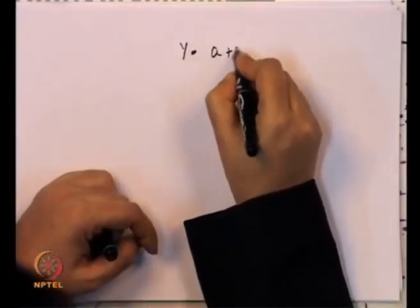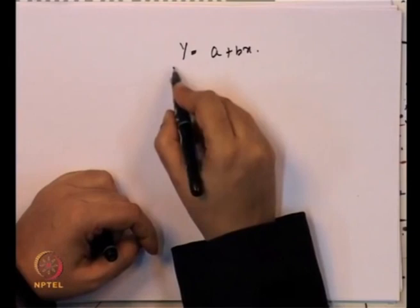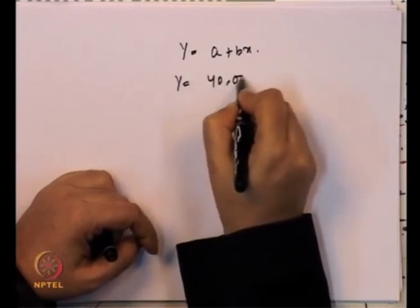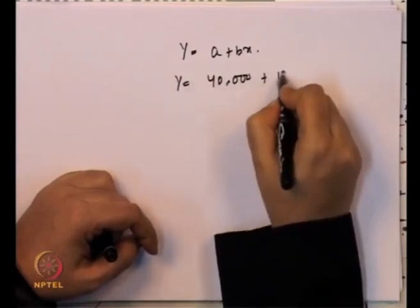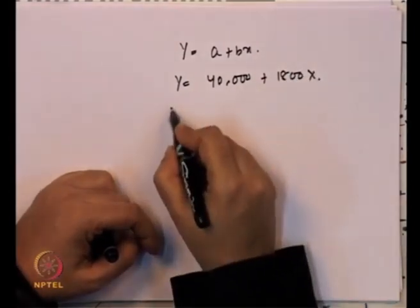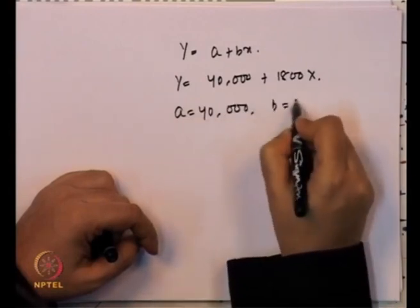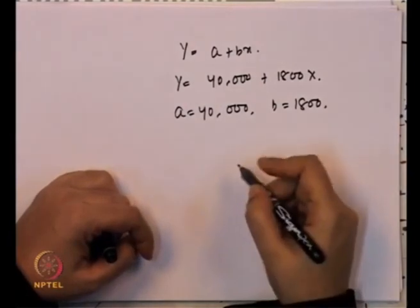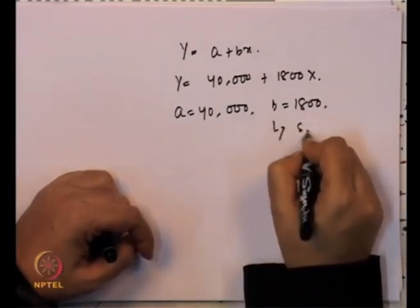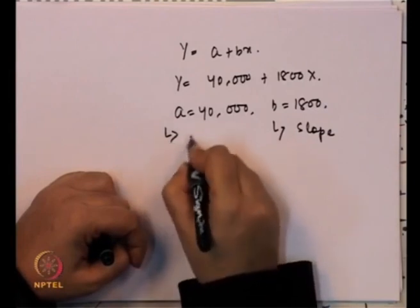We will start with the rudimentary method — how the values of a and b are decided — and then talk about regression technique. Suppose we take the functional form y = a + bx, where y = 40,000 + 1800x. Here we can say a is 40,000, which is the intercept, and b is 1800, which is the slope.